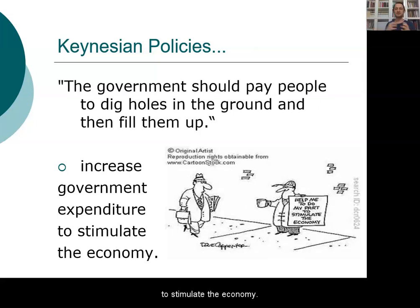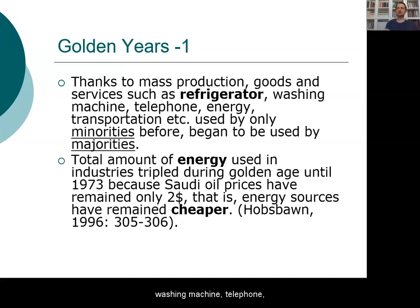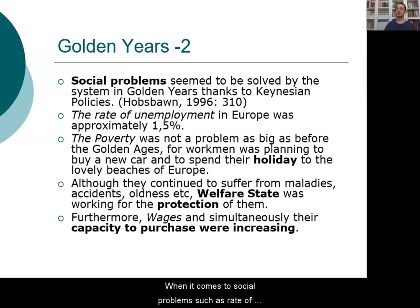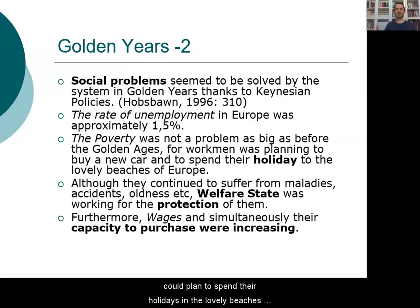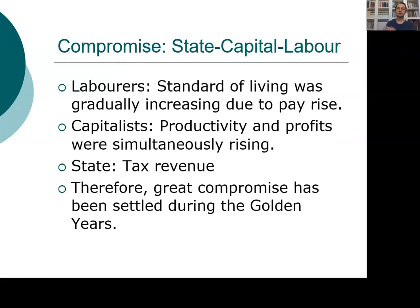Thanks to Keynesian and Fordist policies, goods and services such as refrigerators, washing machines, telephones, energy, and transportation — previously used only by minorities — began to be used by majorities. The amount of energy used in industry tripled during the golden age until 1973. Unemployment fell immensely to about 1.5%, and workers could plan their holidays across European resorts including Turkey, and plan to buy a new car.